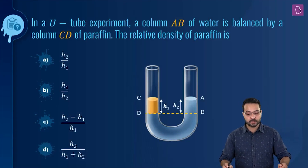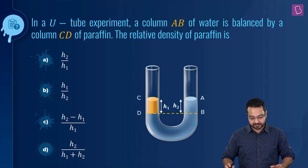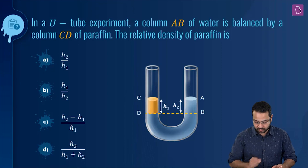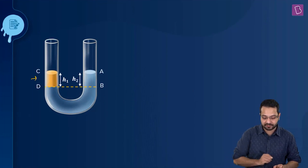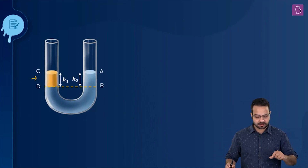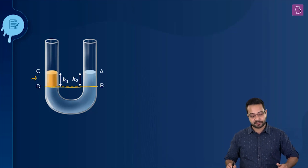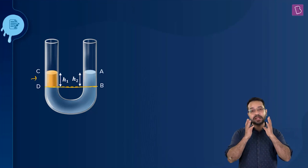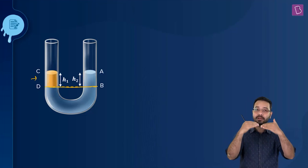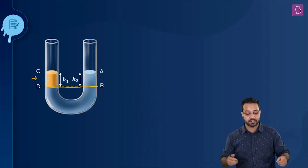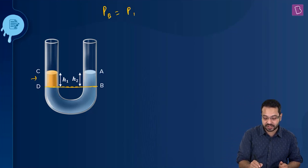In a U-tube experiment, a column AB of water is balanced by column CD of paraffin. In one arm we have water and in the other arm we have paraffin oil. The heights above the reference line are H1 for paraffin and H2 for water. In a static liquid, the pressure at the same level in the same liquid is equal, so the pressure at B equals the pressure at D.